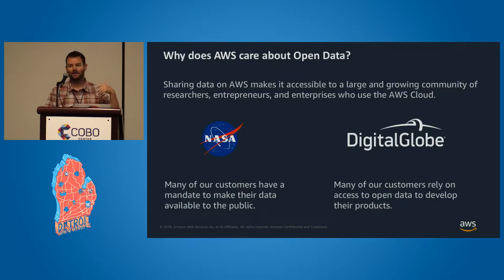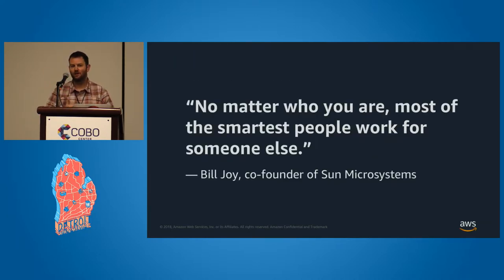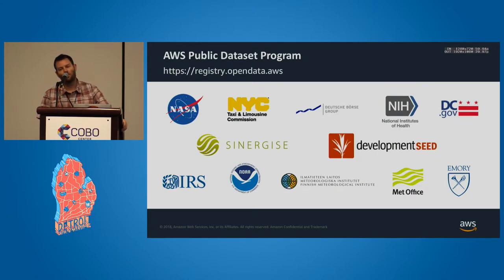Both DigitalGlobe and Esri are interesting for another reason, because in addition to using data made available through the public datasets program, they also make data available through the public datasets program in AWS. When we think about how to make data available, our end goal is to help — when customers say they want to share their data in the cloud, my job is to help them figure out how to best do that for geospatial data. We're a big believer in Joy's Law, and the people who know best how to do that probably aren't sitting on my team. So how can we work with customers to figure this out? That's where the public datasets program comes in.